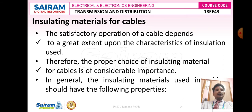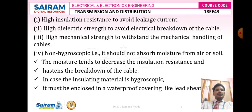In general, the insulating materials used in underground cables should have the following properties: high insulation resistance to avoid leakage current and to avoid electron pockets via treeing, tracking, and voids. High dielectric strength to avoid electrical breakdown of the cable. High mechanical strength to withstand mechanical handling of cables, especially to avoid mechanical injuries and mechanical stress.